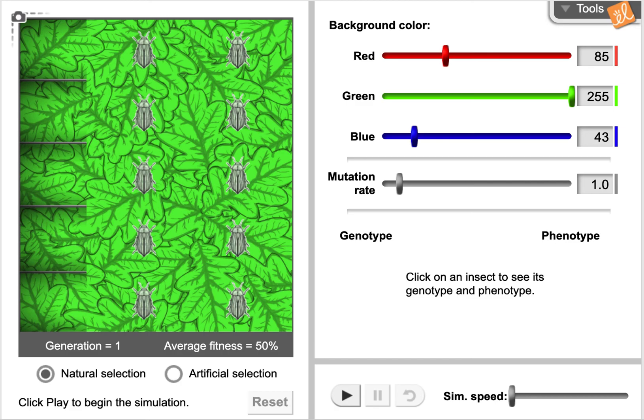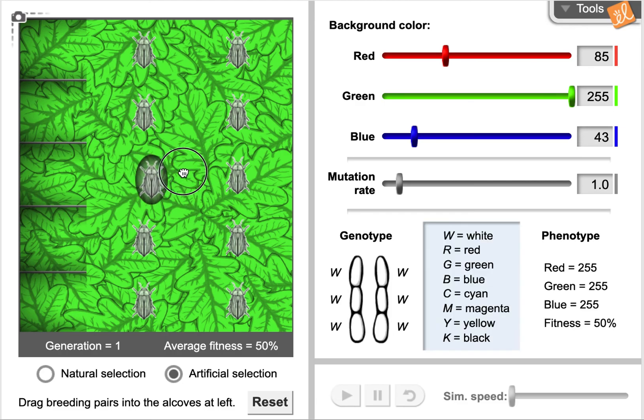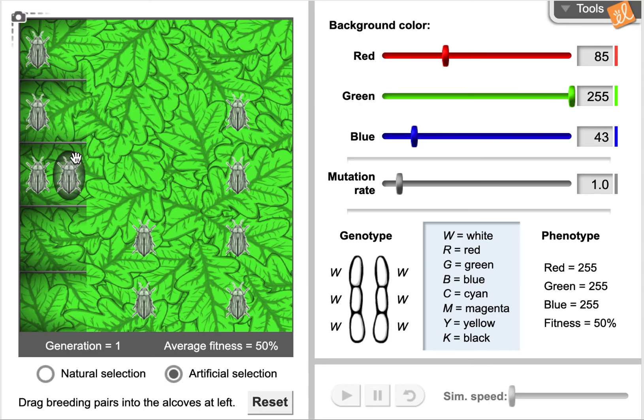When you do the warm-up you are going to switch the gizmo to artificial selection because it starts with natural selection. So you can pick which two types of selection down at the bottom left-hand side here. For the warm-up just click it over to artificial selection and this will let you pick and move around the bugs that we have on screen. You're going to drag those bugs over to the left-hand side and it doesn't matter who you pair with who.